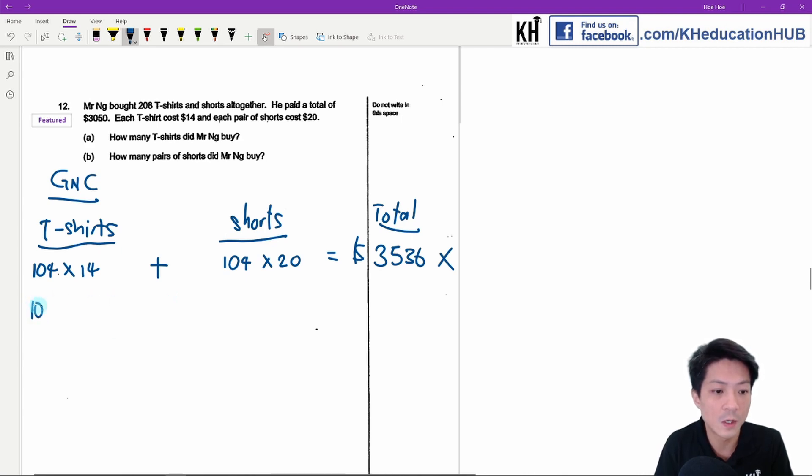So the next guess, you always increase by 1. So this will become 103 times 20. Use your calculator to find out what is the total.